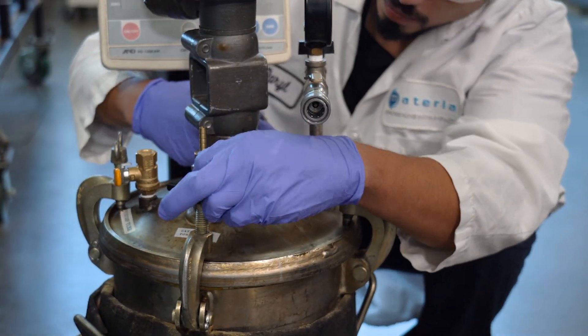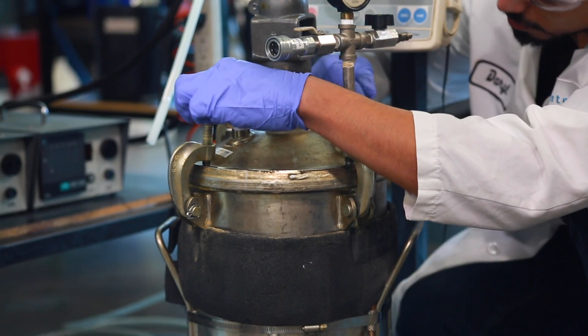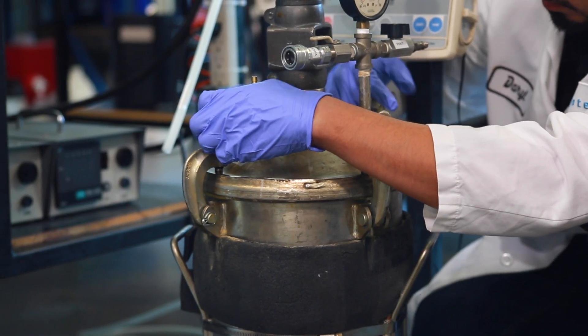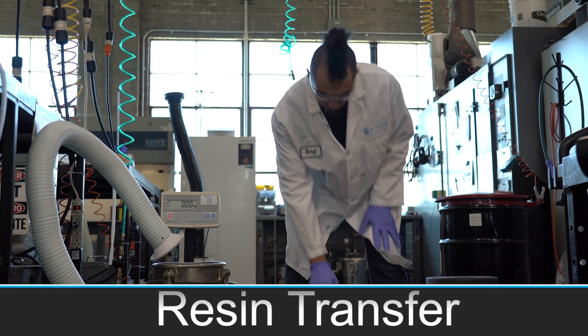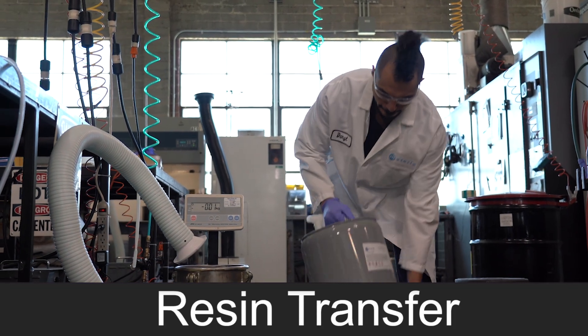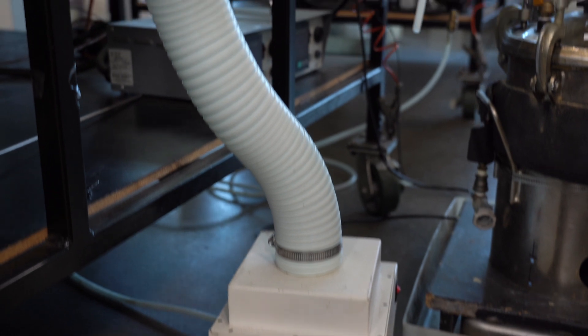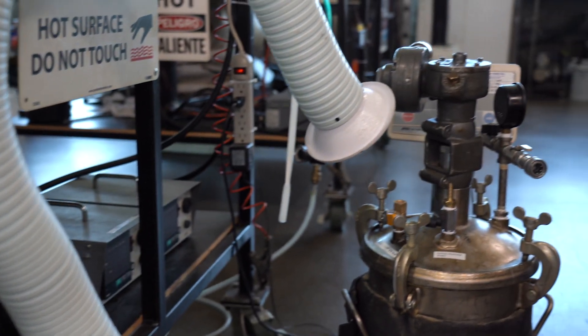We are going to be using a pressure rated mixing vessel, which helps limit the odors and allows us to easily degas the resin. While we're transferring resin into our mixing vessel, we're using a fume extractor with activated charcoal filters to control the odor.